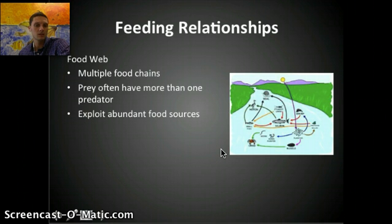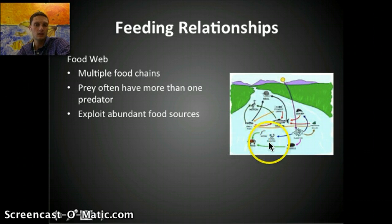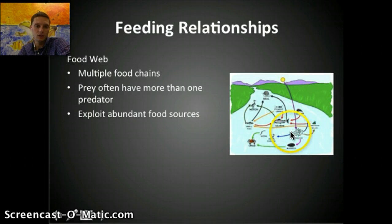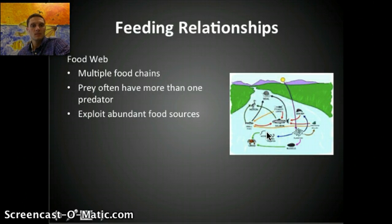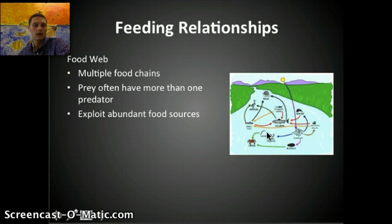A food web, on the other hand, is much more complex — it's made up of multiple food chains. Sunlight provides energy to autotrophs, which then provide energy for everything else in that ecosystem. Food webs get quite a bit more complicated, and often it's hard to know exactly how everything is interacting. Prey often have more than one predator, and predators will exploit abundant food sources depending on the season.